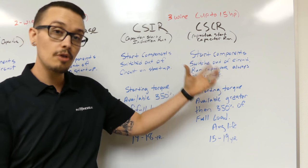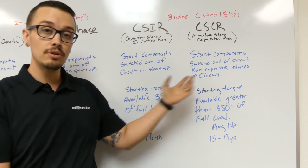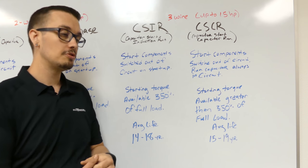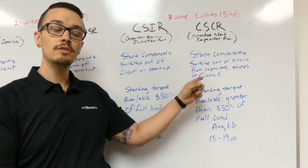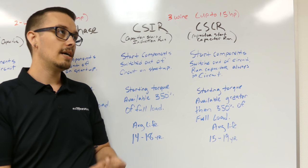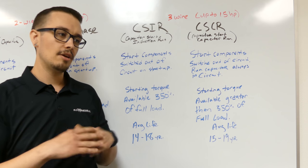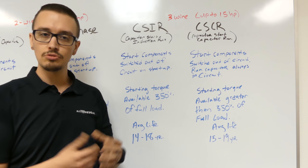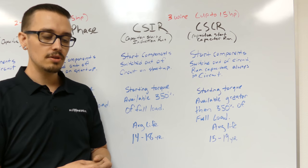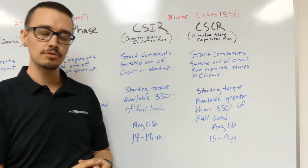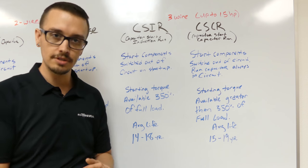With a CSCR panel, the start components do disengage from the circuitry, but there is still a run capacitor that is always engaged from startup. And the whole idea there is that helps to smooth out the load transitions as the load changes around, or the pressure varies, or the flow varies, and so forth.